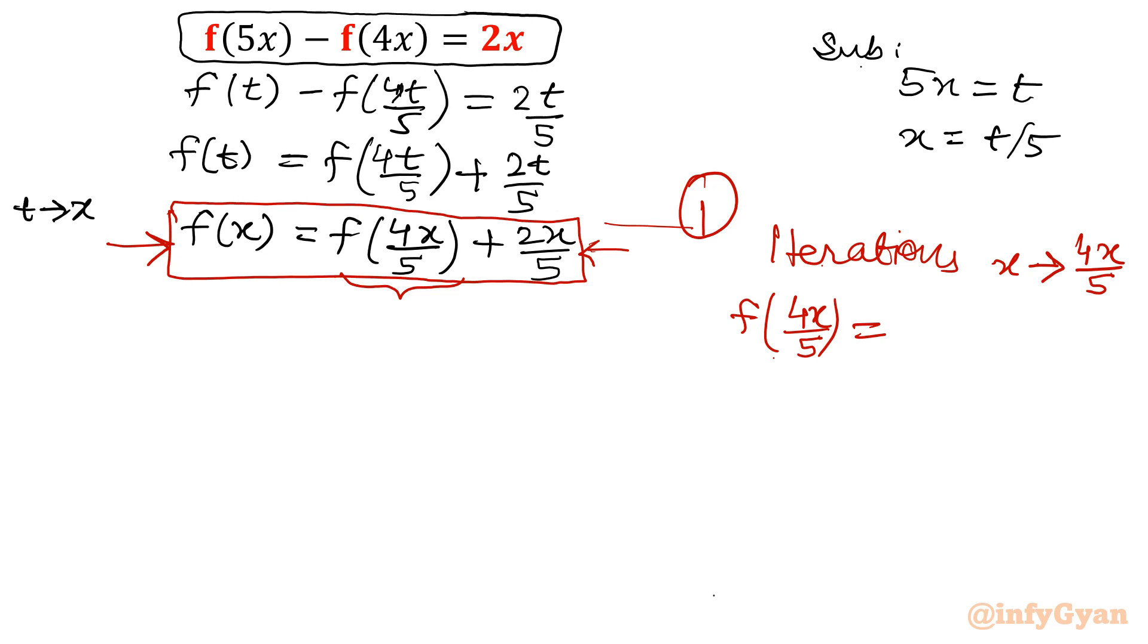Once I substitute x as 4x over 5, left hand side would be f of 4x over 5. Now this function would be f of 4 over 5 times 4x over 5, so 16x over 25, plus 2 over 5 times 4x over 5, so 8x over 25.